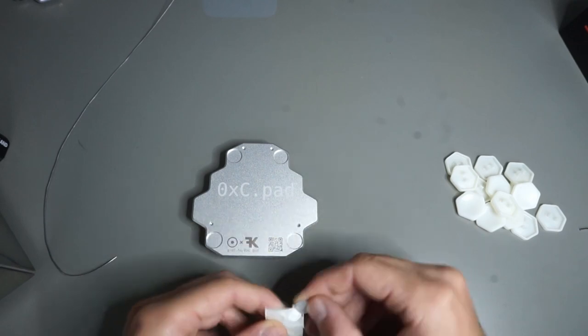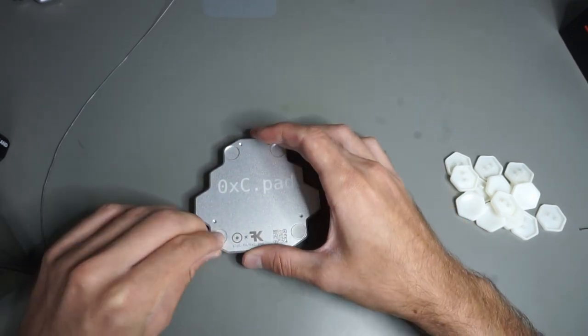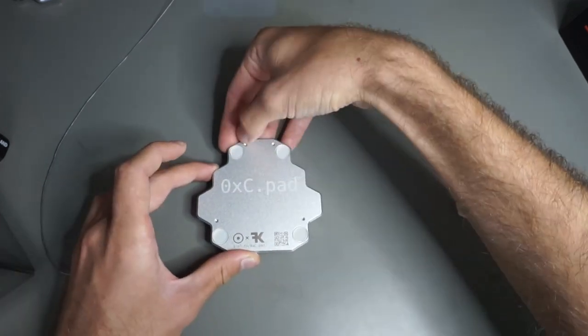Now you can flip the board back over and add the four rubber feet. You can just pull them off the backing tape with your fingernails and add them into the four cutouts on the back of the bottom plate.